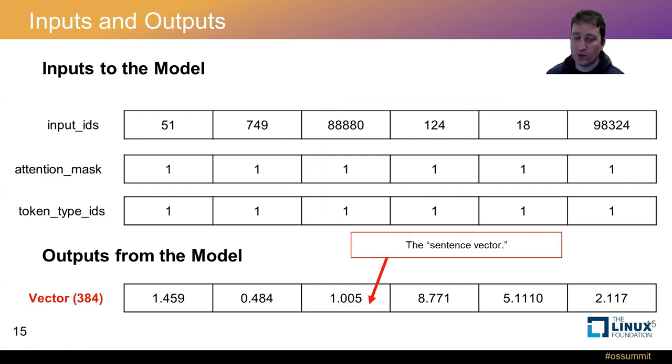The outputs from the model that we saw, a 384 length array, this is our sentence vector. This is what we are after. We know we saw from neutron that they are floats. And so each value in this 384 dimension array will have a float value. And that is our sentence vector.